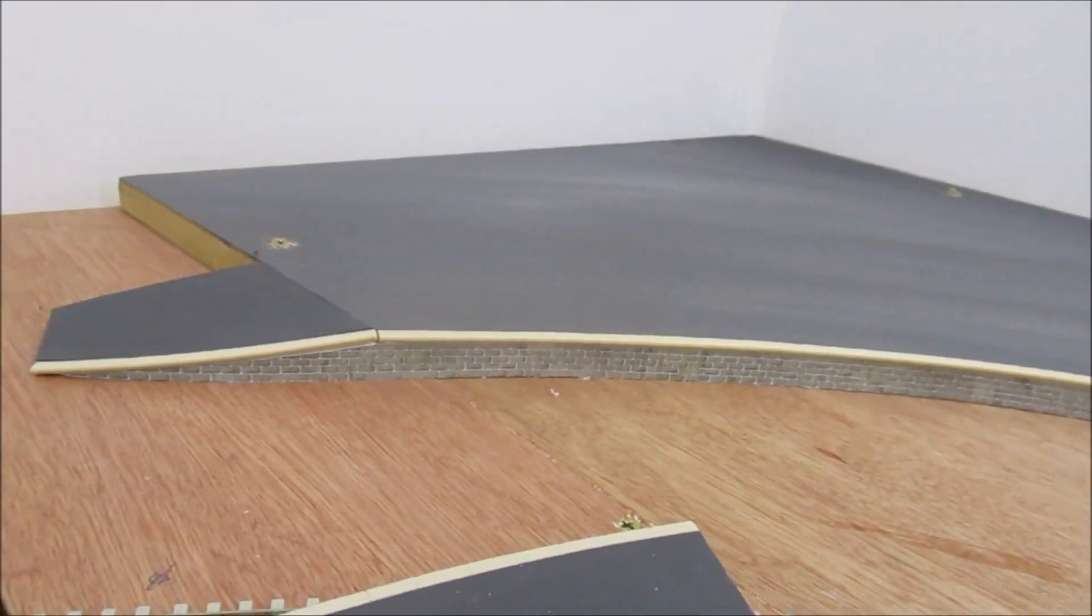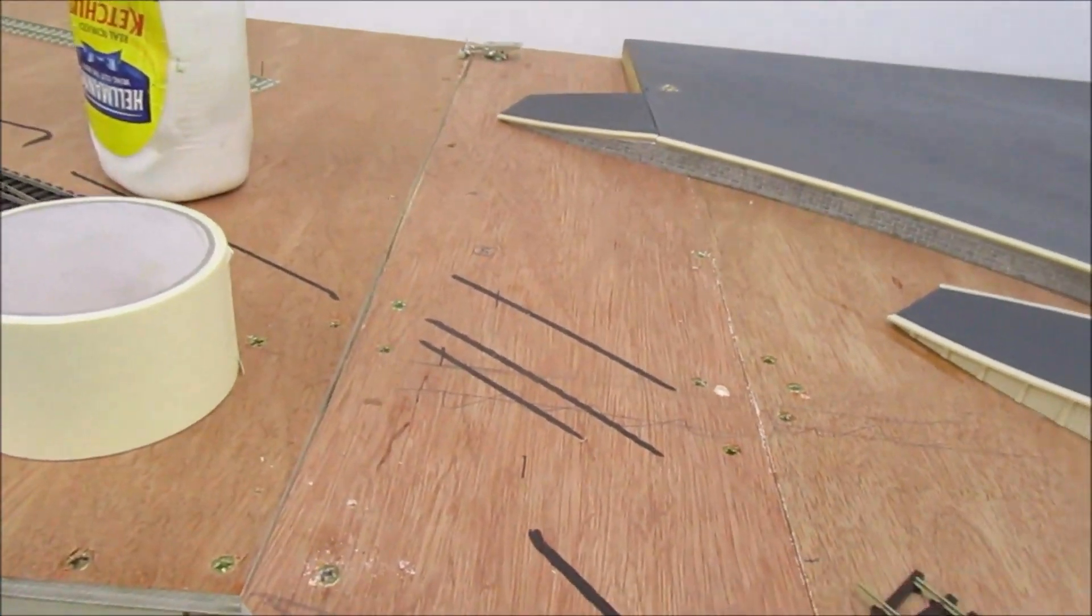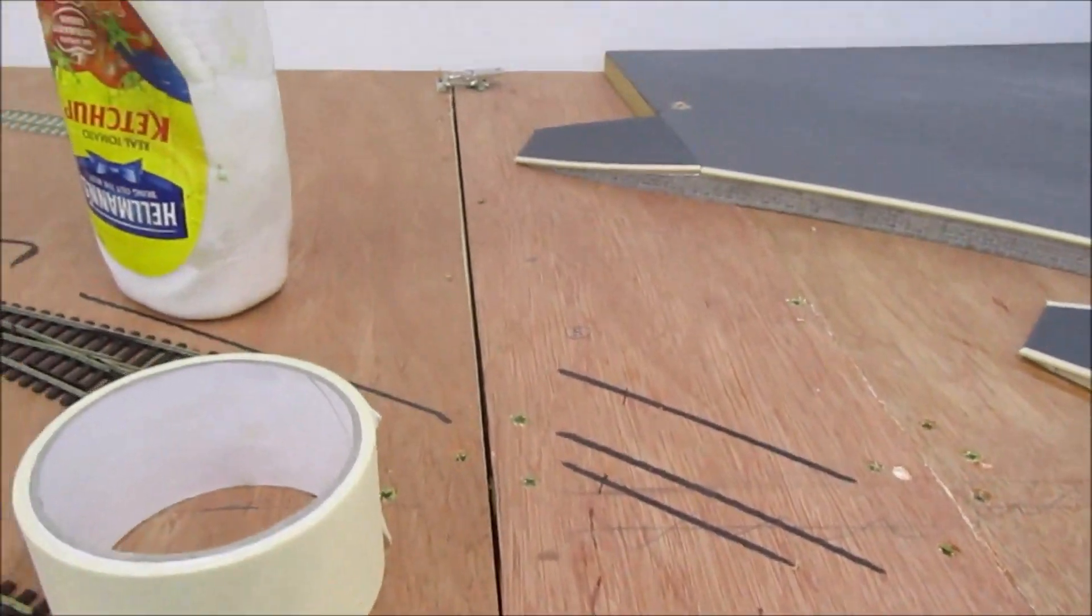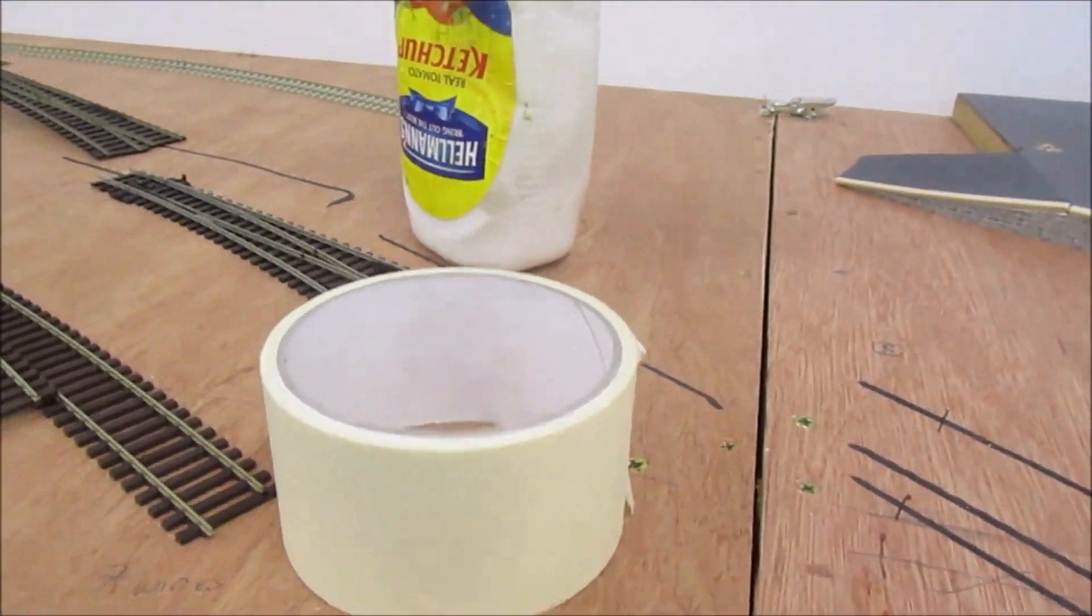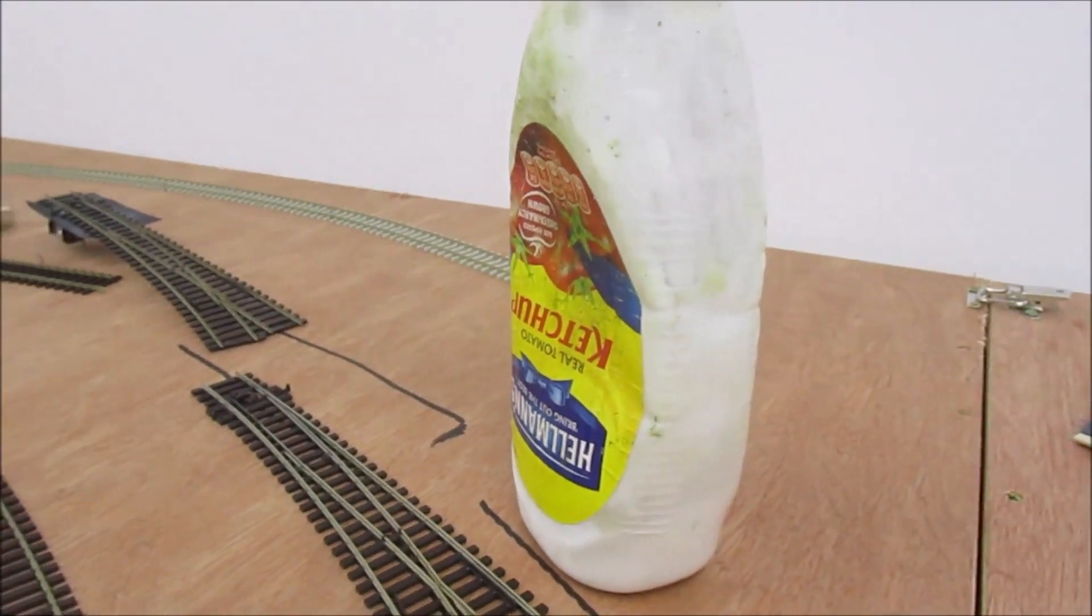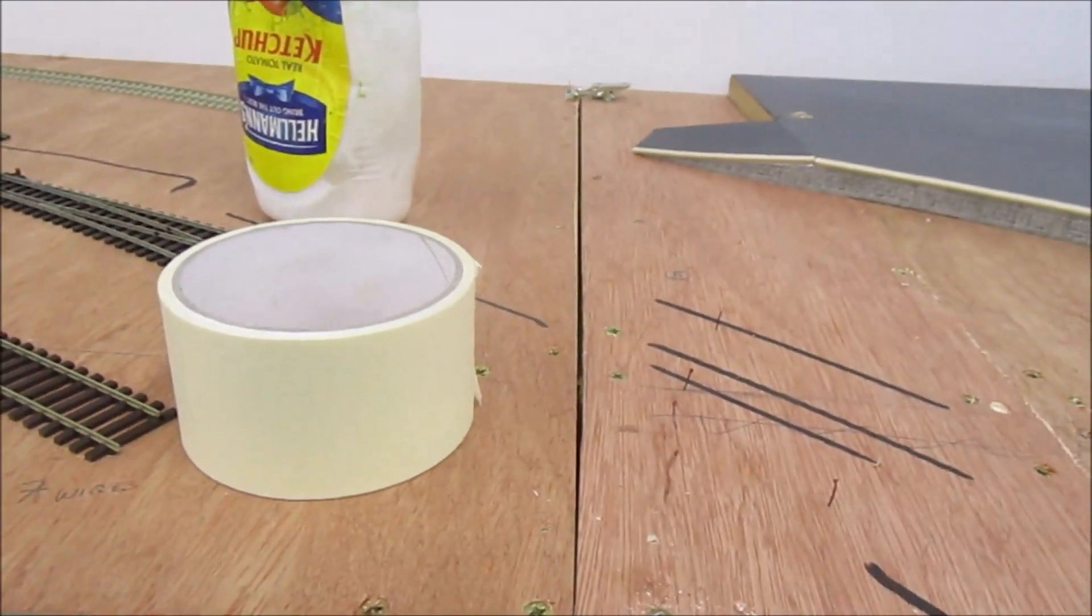Now I'm going to lift the platform and start laying some cork and track. I mentioned some time ago about this bad joint that I've got here and I said I'll be using masking tape and PVA. It's not really Helmets catch up, it is PVA in there, neat PVA. So let's do that now and repair that joint.